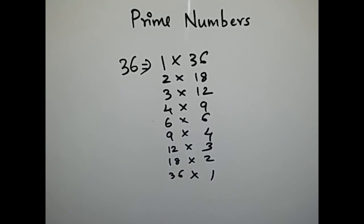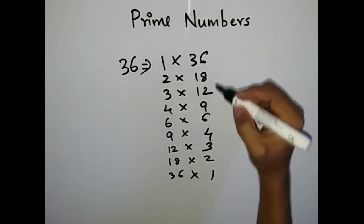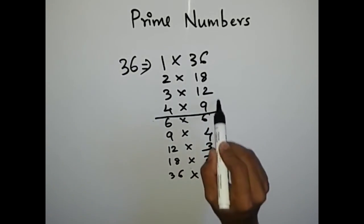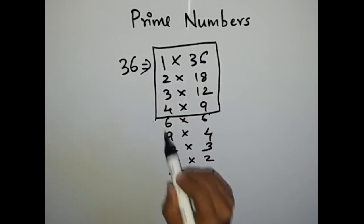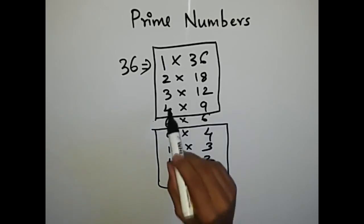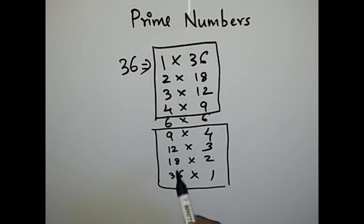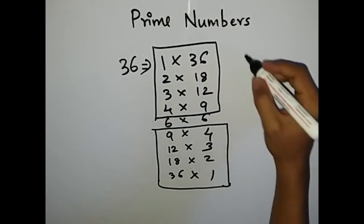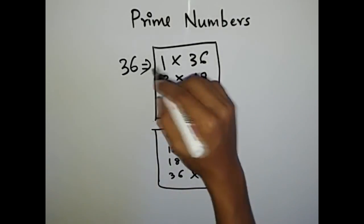These are the factors of 36. If you look closely what you will find out is this box and this box are pretty much the same, like 4 into 9, 9 into 4, 3 into 12, 12 into 3.